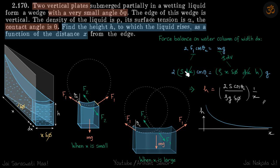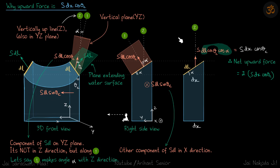Now, how can we write f1 = s·dx when dx is the horizontal length and dl, the actual surface length, is clearly different from dx? Let's work through that. This diagram may look very complicated, but it is not complicated in theory — it just requires careful visualization.